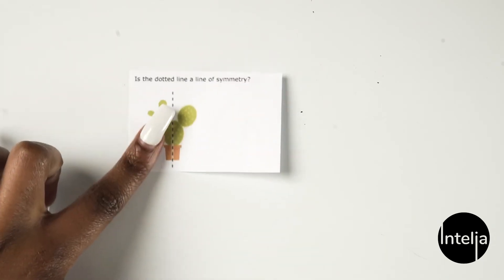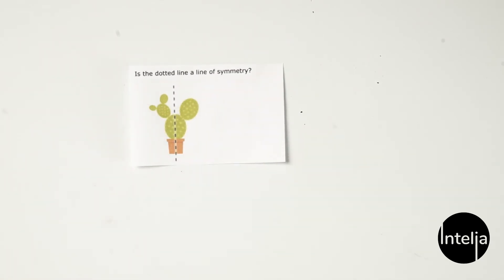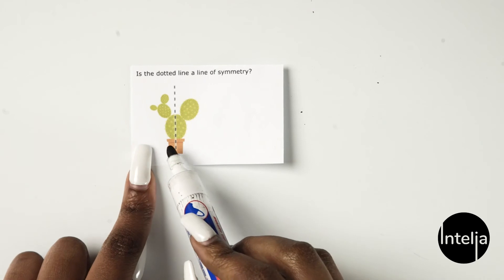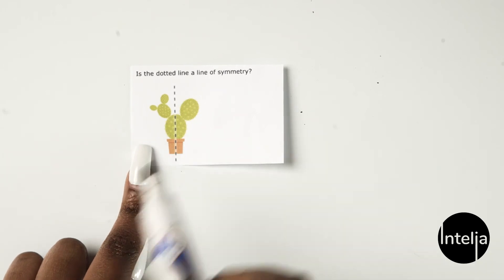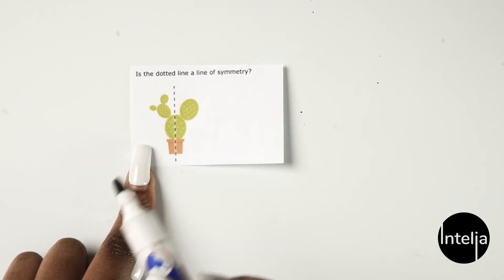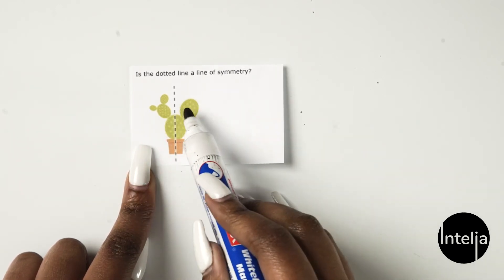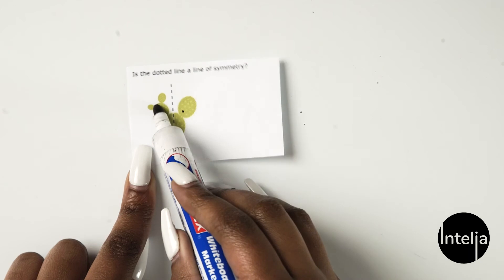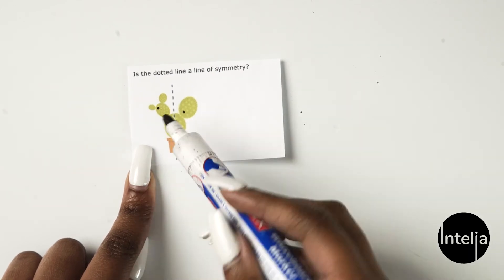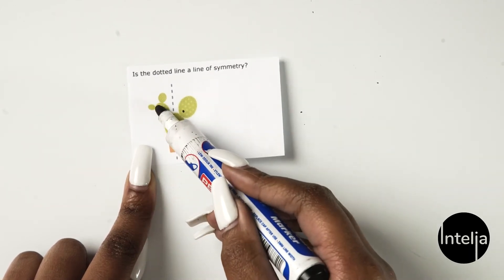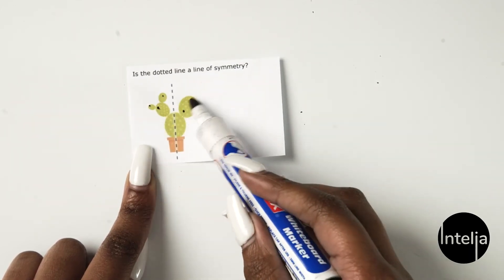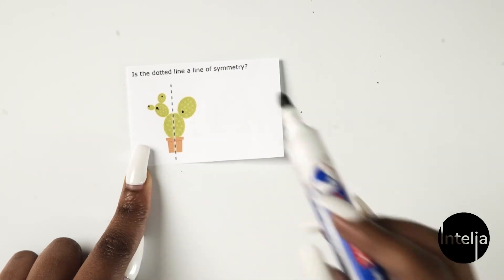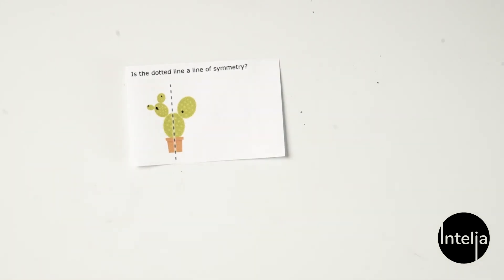Moving on to the cactus — is this a line of symmetry? No, it isn't. The trunk portions look the same on each side, but the branches aren't exactly the same. You have one, two, three branches on one side and only one on this side. So it isn't a line of symmetry.